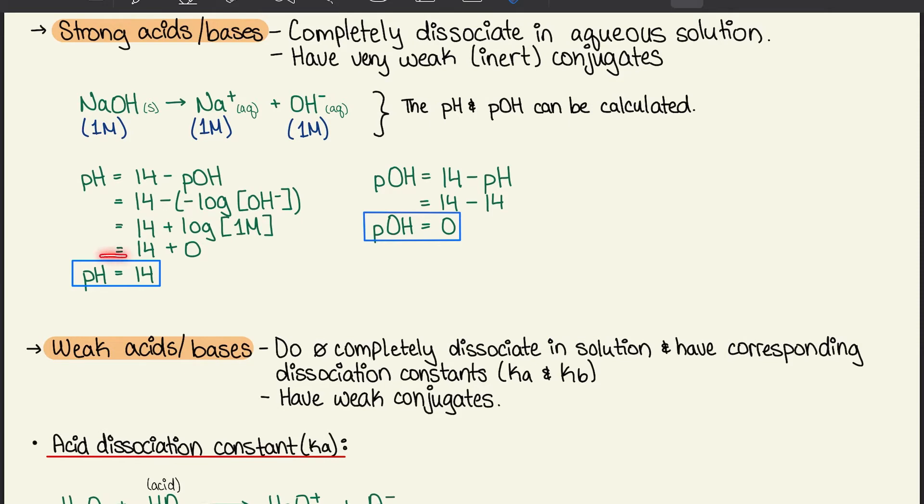Now to find the pOH, we take the combination of the two, which is 14 minus the pH value that we calculated before. So 14 minus 14 gives us a pOH of 0.